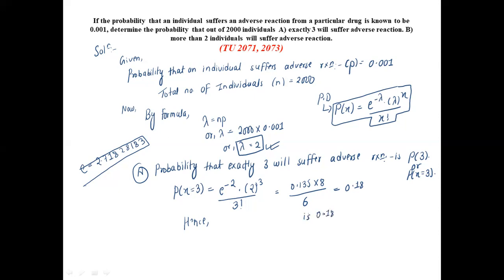That solves part (a) from question number 2071 or 2073. Now for part (b), we need to find the probability that more than two individuals will suffer adverse reaction.